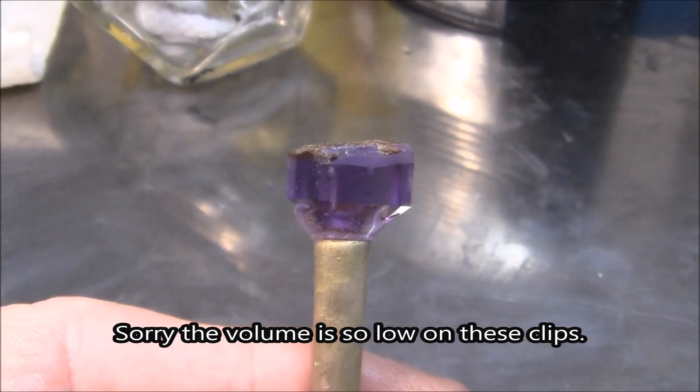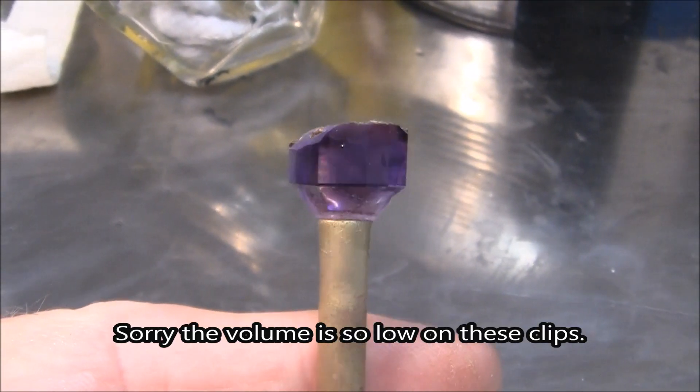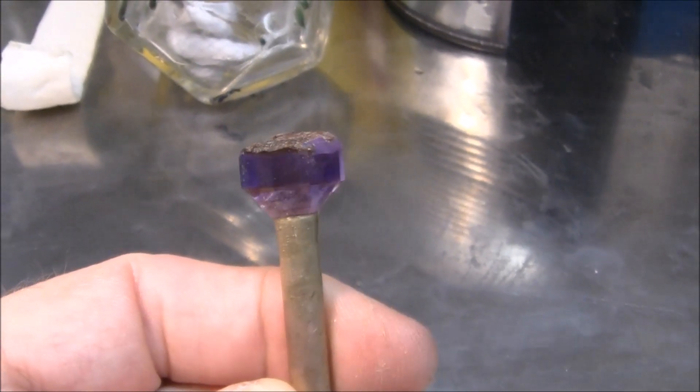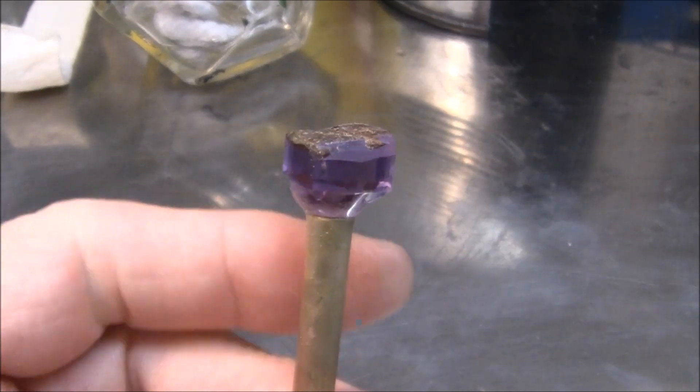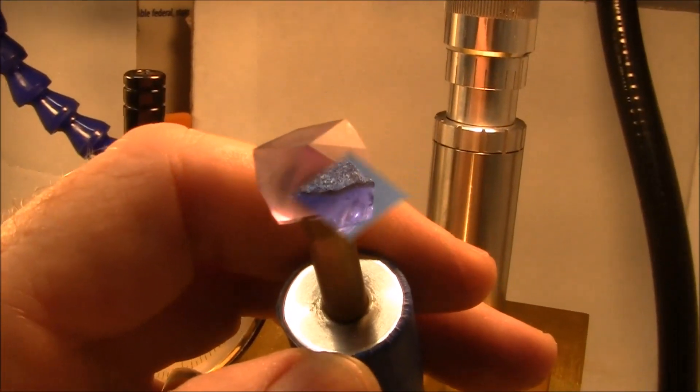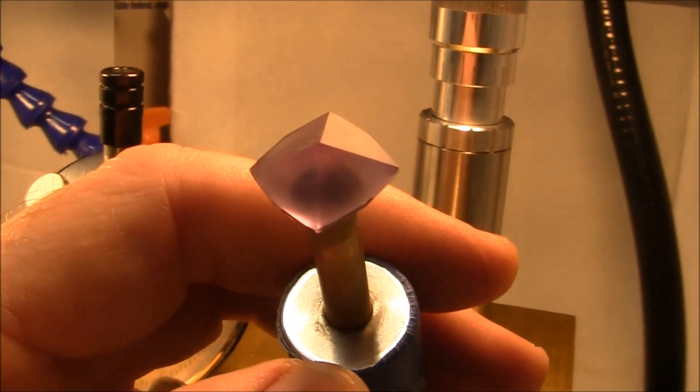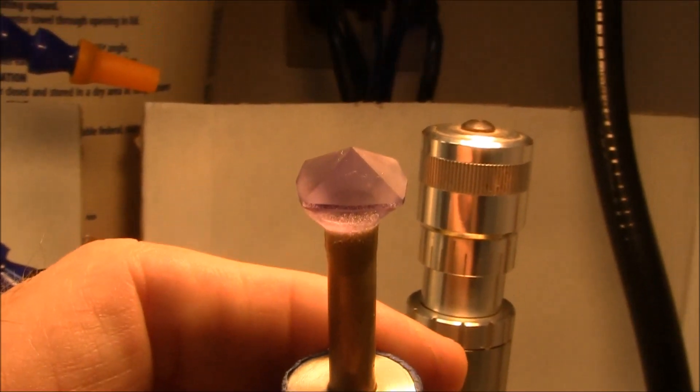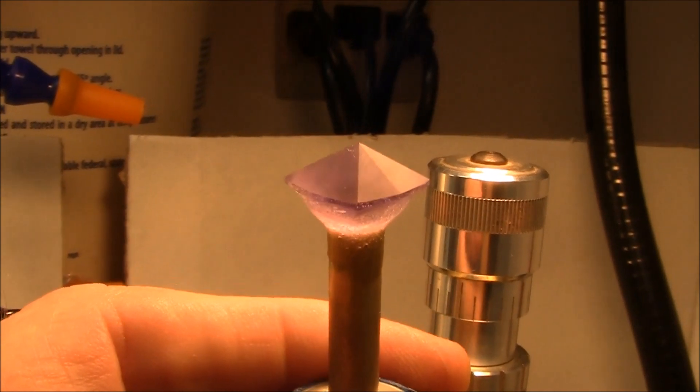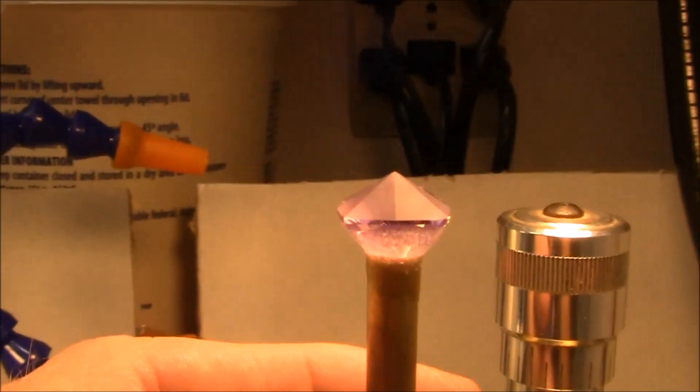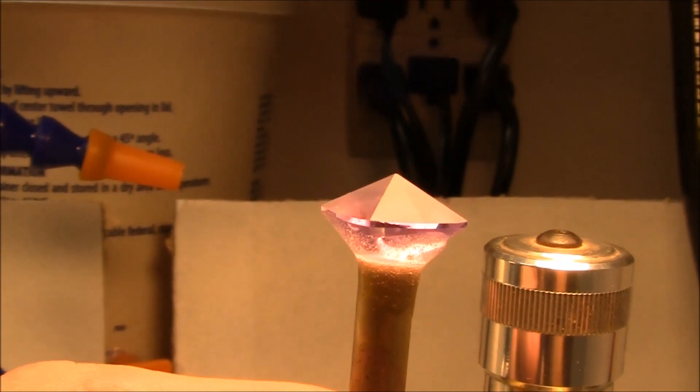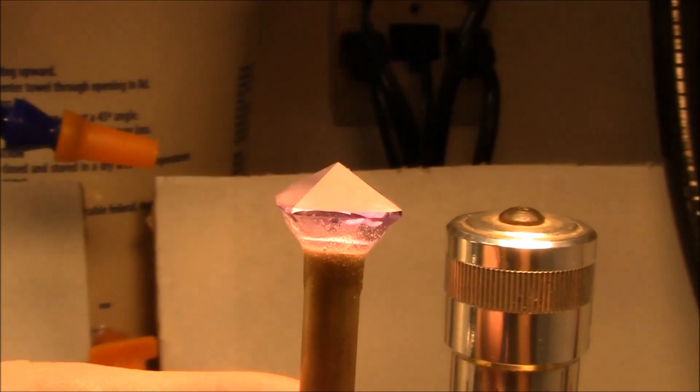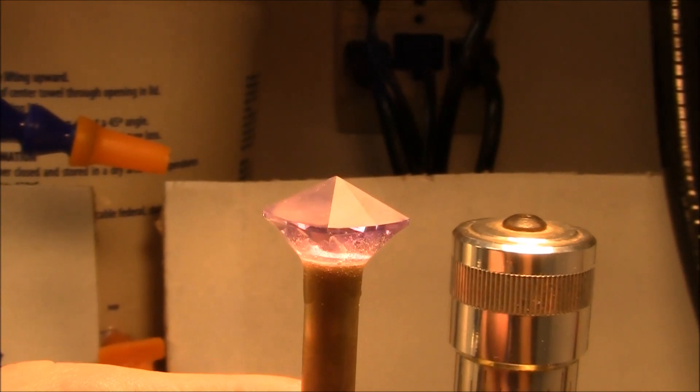I'm ready to start faceting this piece. I've cut the first set of 8 facets. I'm working down to the girdle. I'll be sizing my girdle with this cut. This is cut at 34.14 degrees.